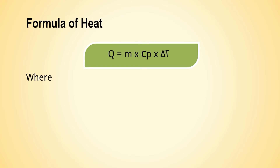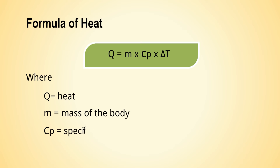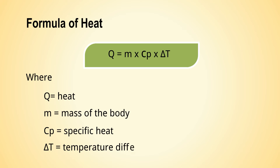Now the formula of heat. It's very simple — we all know the basic formula of heat. Q is equal to m × Cp × ΔT, where Q is heat, m is the mass of the body, Cp is specific heat, and ΔT is the temperature difference.